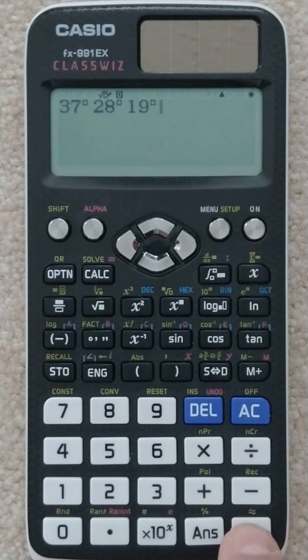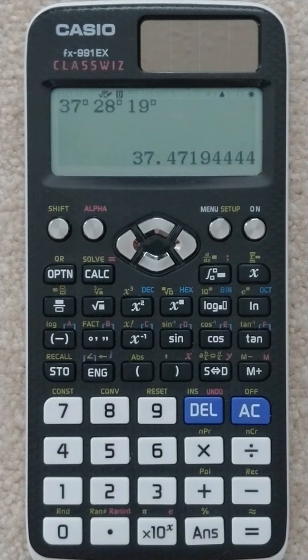Type that in, and then you hit your equal, and it will convert it. It's 37.4719, etc., decimal degrees.